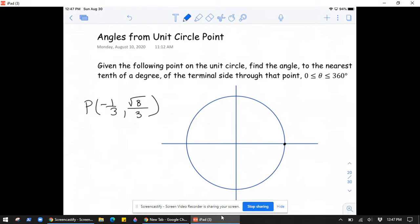So first let's plot this point on the unit circle. It should bring us maybe here roughly. Since this is the unit circle, then the hypotenuse is 1, this side must be negative 1/3, and this must be the square root of 8/3.